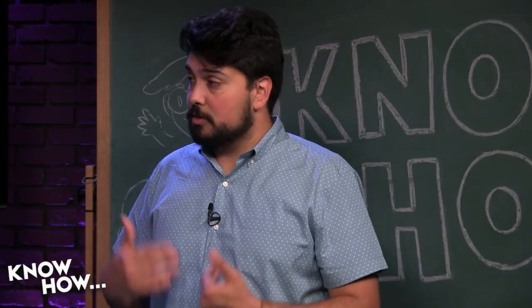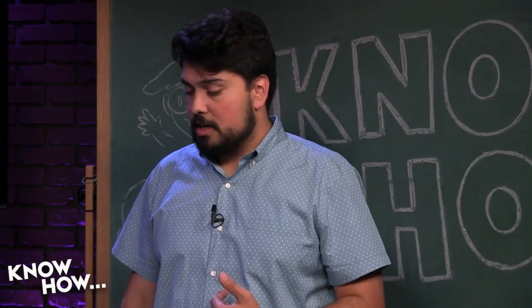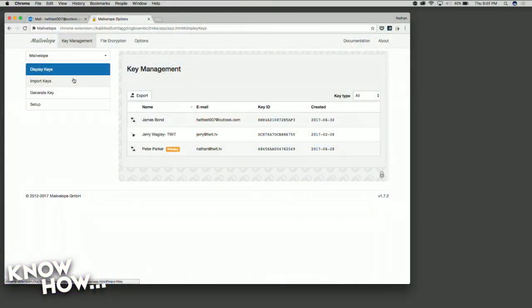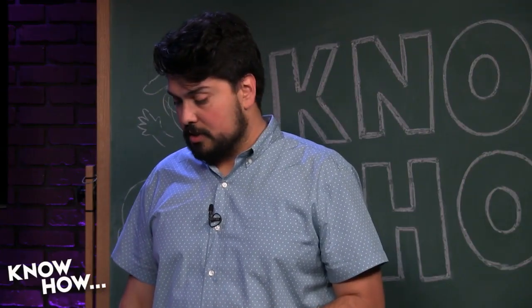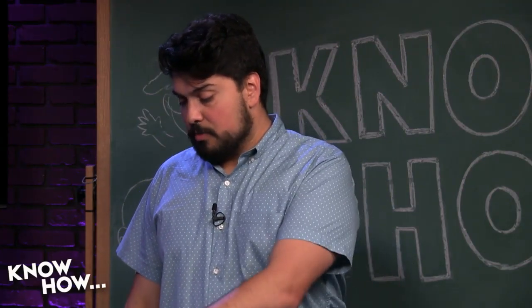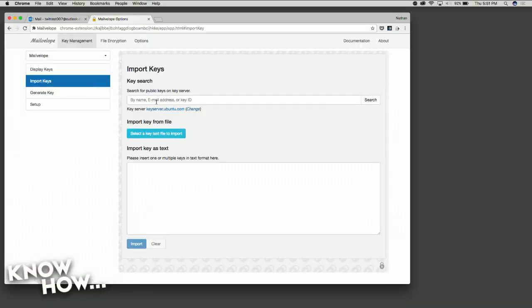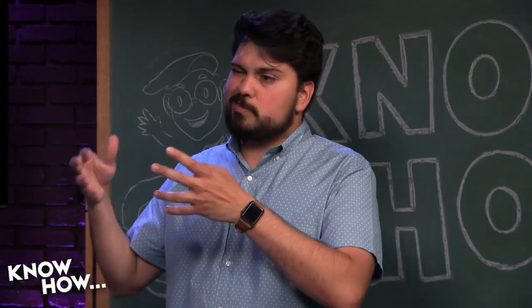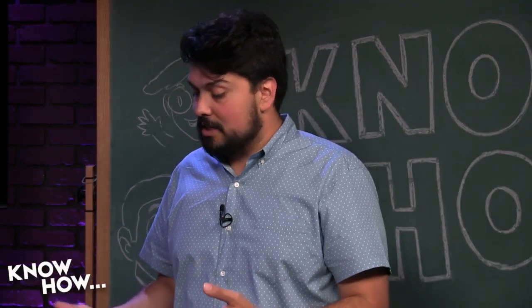He can search for my email address. If I shared it publicly he'd be able to find it, add me, and then decrypt it. If not, I would have to send it to him directly. In Mailvelop, you go to the Import Keys tab, and then you look for someone either by their name, email address, or by what's called a key ID. Sometimes people share that on there — you might see 'PGP:' followed by a dozen numbers and letters.